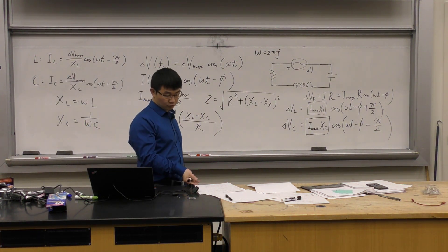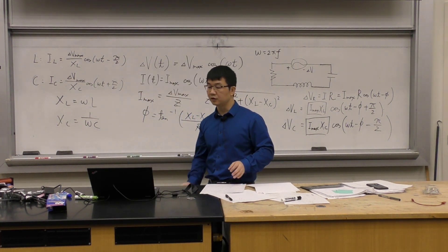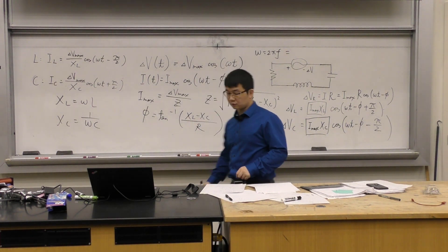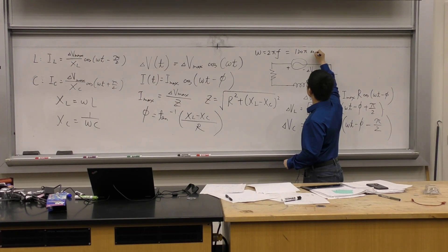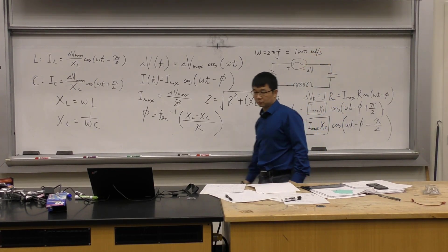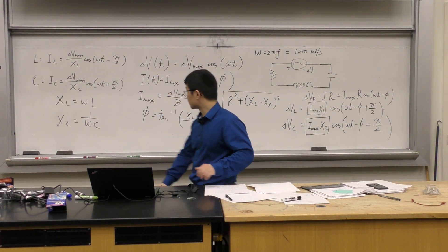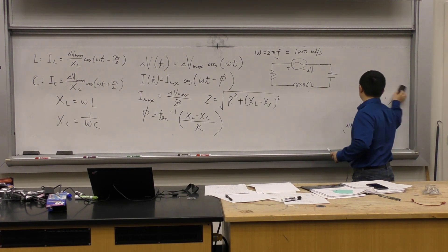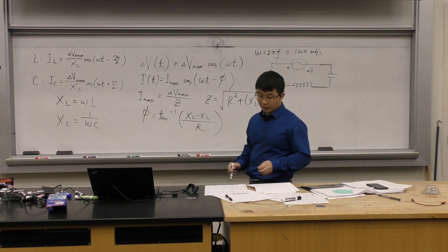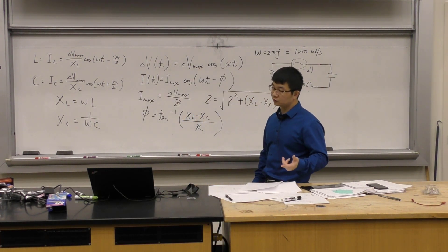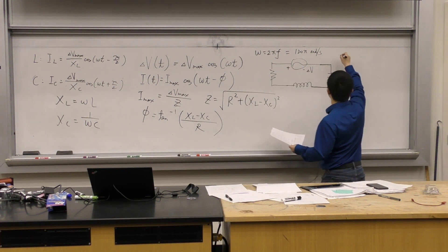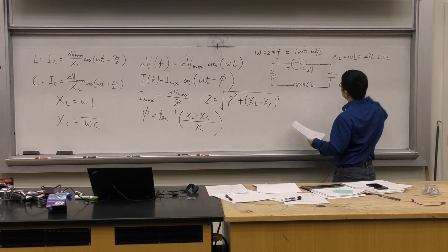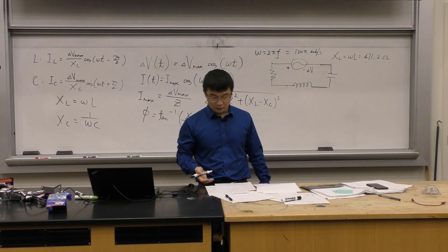Now here are the answers. First, omega = 2π × 60. Then find XL and XC. Convert C to SI units. The XL I found is 471.2 ohms.